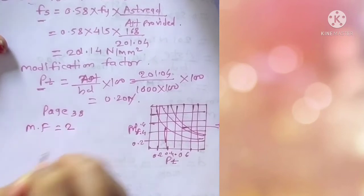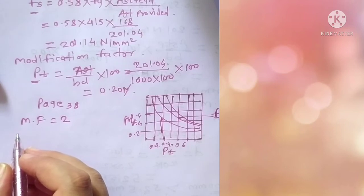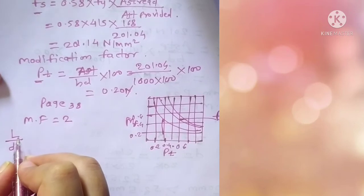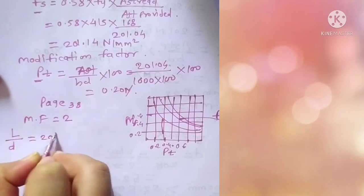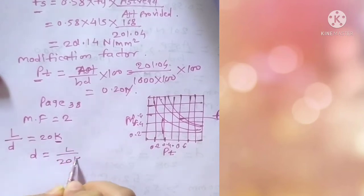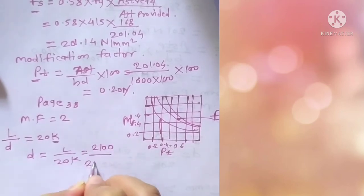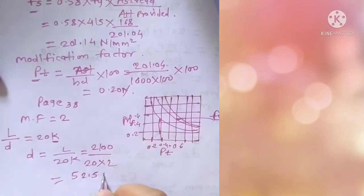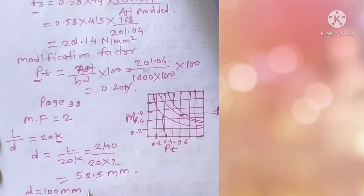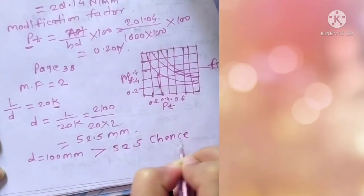There is one formula by which we are going to calculate the depth required for the slab. L by D equals 20K, where K is modification factor. So D equals L by 20K. L is 2100 divided by 20 into 2, which comes out to be 52.5 mm. However I assumed effective depth as 100 mm, and this 100 mm is very much greater than the required depth, and hence again I am safe in deflection as well.